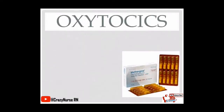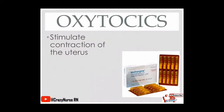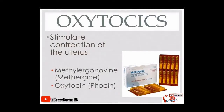When we say oxytocics, it stimulates contraction of the uterus. Examples include methergonovine, or Methergine, and oxytocin, or Pitocin. So when we say oxytocic, it mainly stimulates the contraction activity of the uterus.